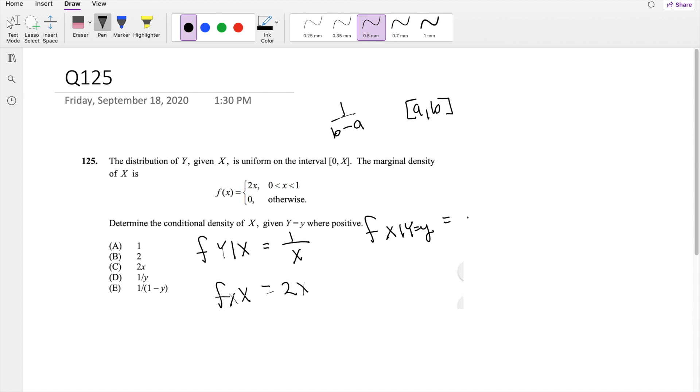So then by definition, this is equal to f(x,y) divided by f(y), the marginal distribution of Y. And we're given here f(y|x).